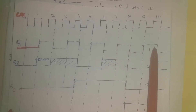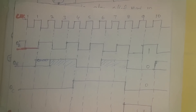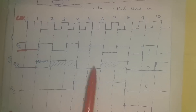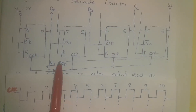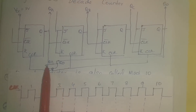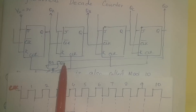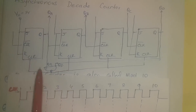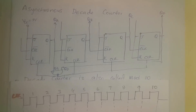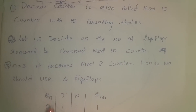At the negative edge of the ninth clock, QA undergoes a transition and becomes high; QB continues low; QC continues low; QD continues high. At the negative edge of the tenth clock, both QA and QD are high. These are applied to the NAND gate — the output goes low, clear is applied to all flip-flops, and the entire counter is reset.